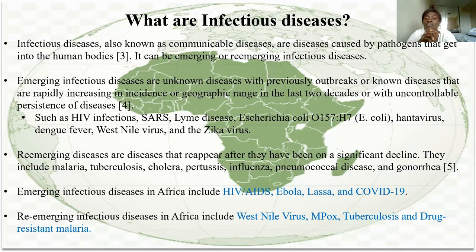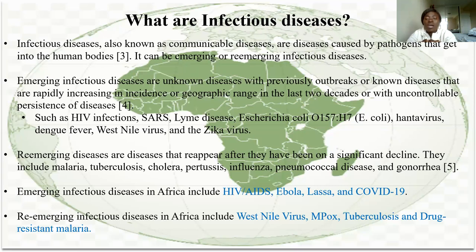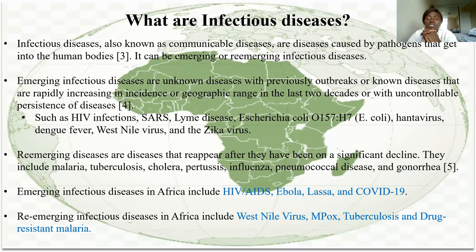HIV has been present for more than two decades and continues to spread. Re-emerging diseases are those that reappear after a significant decline — diseases that were controlled for a while and then come back as an epidemic. Examples include malaria, tuberculosis, cholera, and dysentery. In Africa specifically, emerging diseases include HIV, Ebola virus disease, Lassa virus, and COVID-19. Re-emerging diseases in Africa include West Nile virus, post-tuberculosis, and drug-resistant malaria.